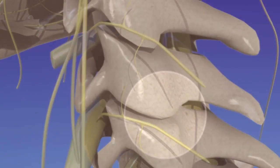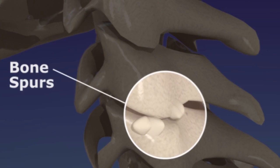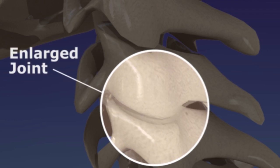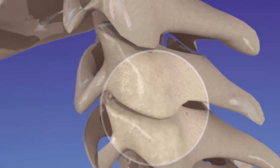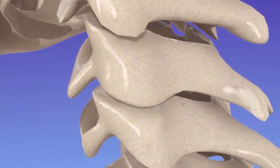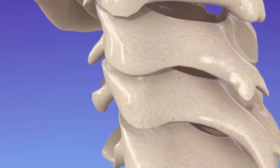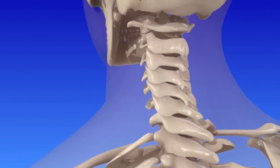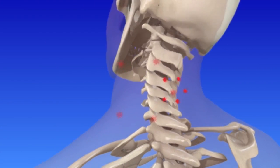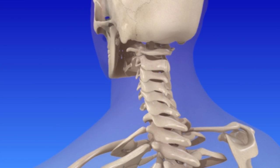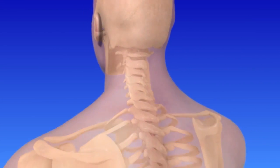Wear and tear can lead to abnormal growths called bone spurs, enlarged joints, and osteoarthritis — a degenerative form of arthritis causing facet joint pain. The cervical facet joints are susceptible to wear and tear caused by normal motion of flexion, extension, rotation, and side bending. This may be termed facet joint disease or facet joint syndrome.